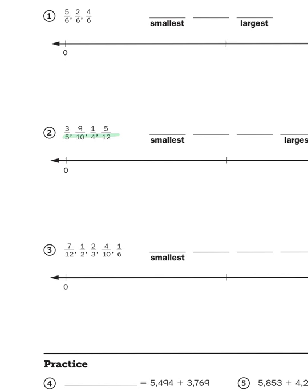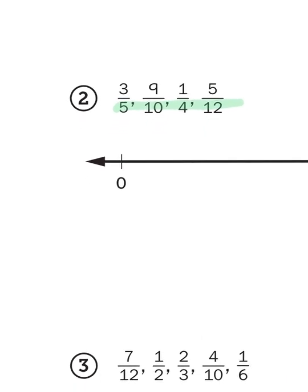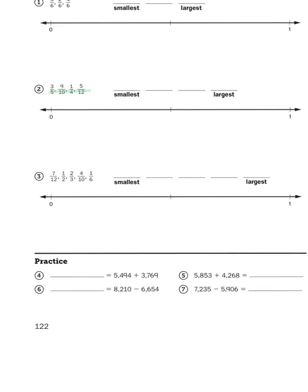So let's look at problem number two, which is a little trickier. Here we have unlike denominators, meaning that all the numbers on the bottom are different. So what we have to do here is think in terms of equivalent fractions. Now before we could do that, we have to start thinking in terms of the size and scale of each fraction in general.